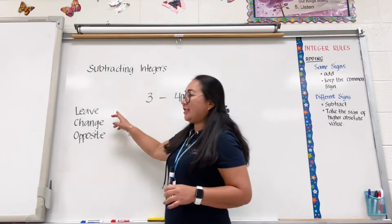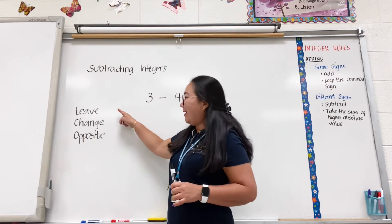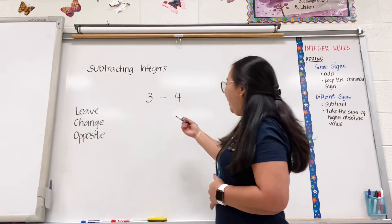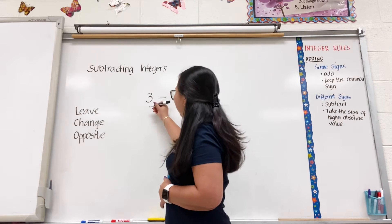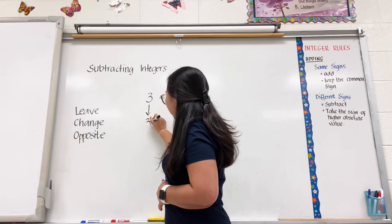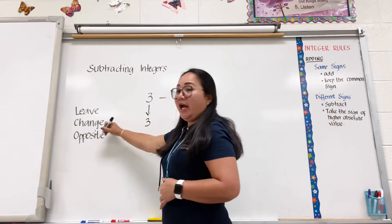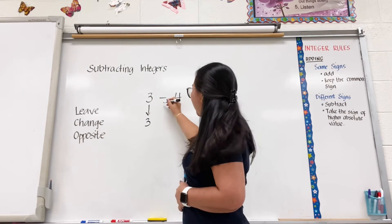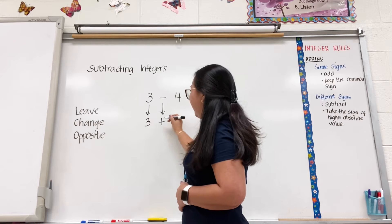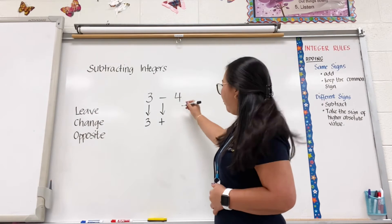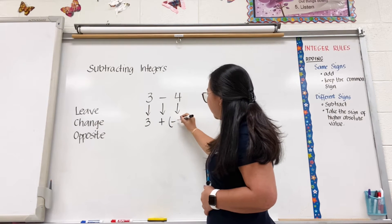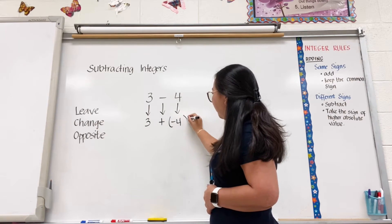In subtracting integers using a number line, we will do the same thing: Leave, Change, Opposite. So we leave 3, change the subtraction sign to addition sign, and the opposite of positive 4 is negative 4.